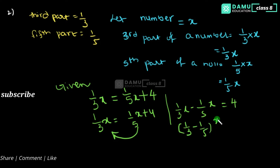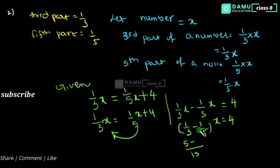So (1/3 minus 1/5) x will be equal to 4. The LCM of 3 and 5 is 15, so 1 times 5 is 5, minus 1 times 3 is 3, giving us 2. So we get (2/15) x — x is there.